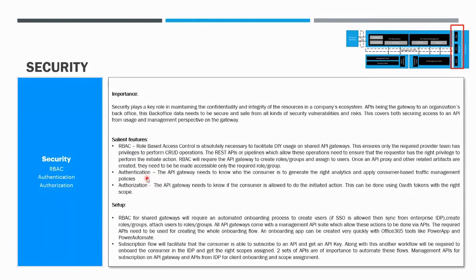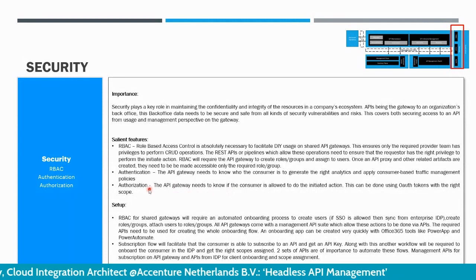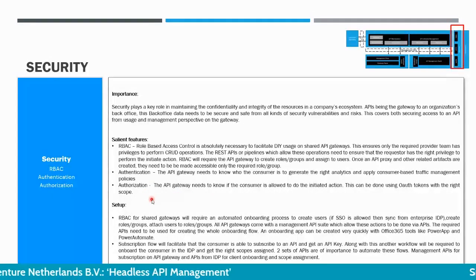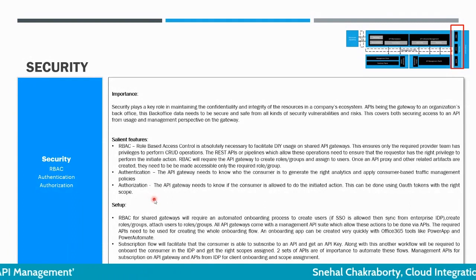For authentication and authorization there are different steps. Authentication is about knowing who the consumer is on the gateway. Most platforms manage this internally, allowing consumers to create their own application, get API keys, and subscribe to APIs — this needs to be hooked into the API marketplace. For authorization, the consumer needs to be onboarded on the identity provider, client onboarding is required, and the right scope must be assigned so that when they call an API resource they are verified to be allowed to do so.